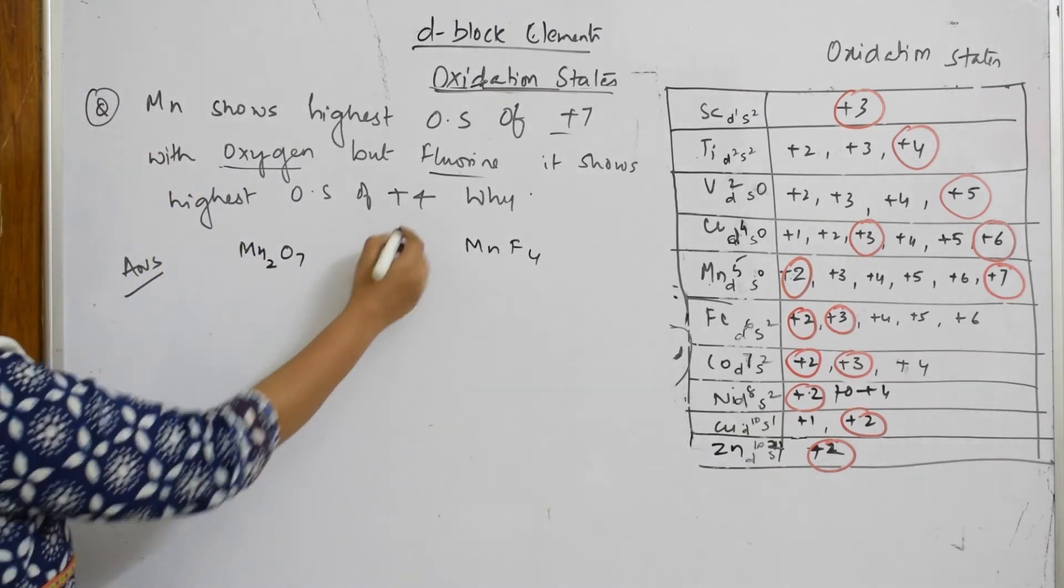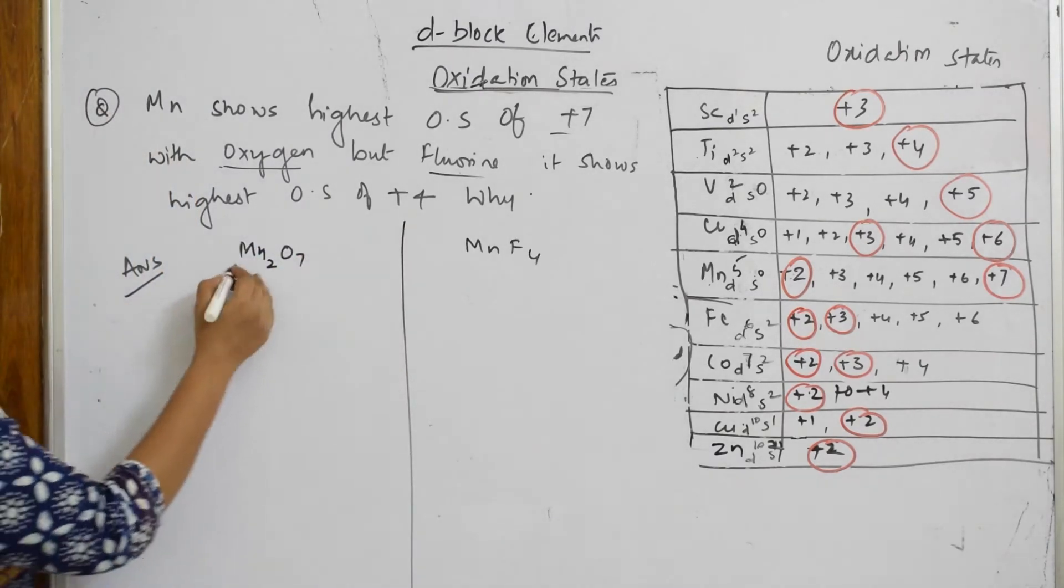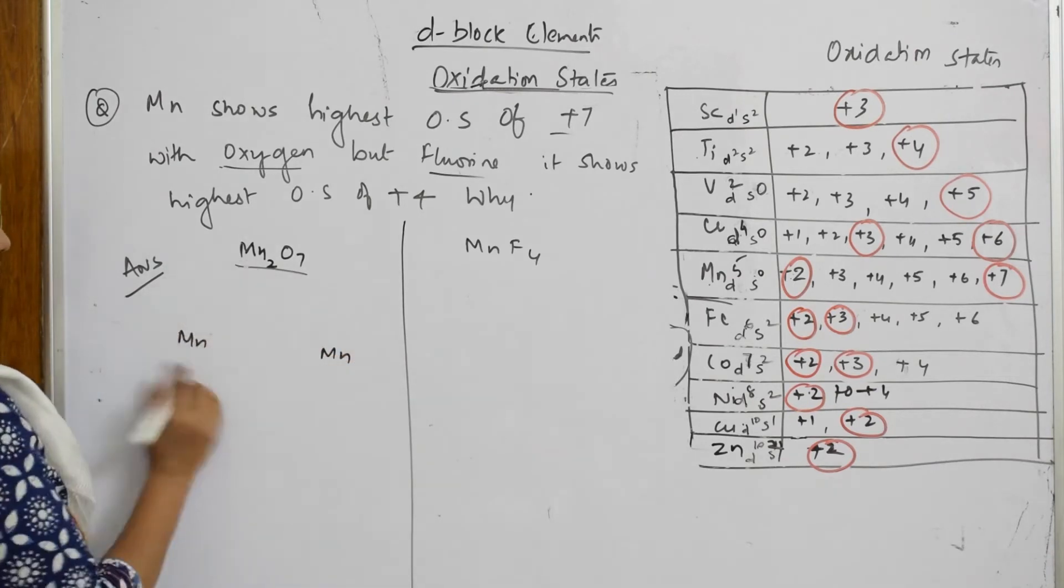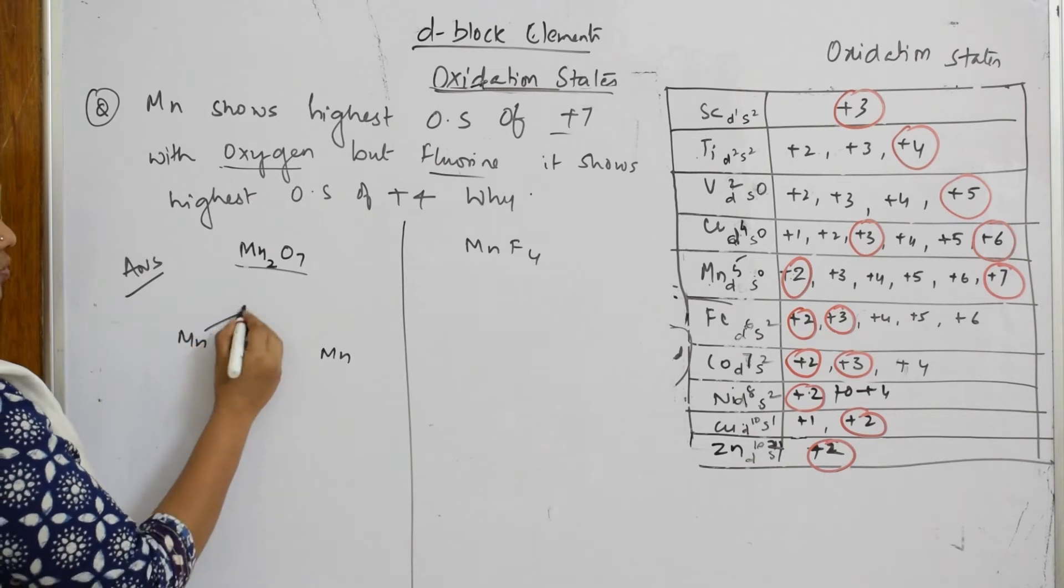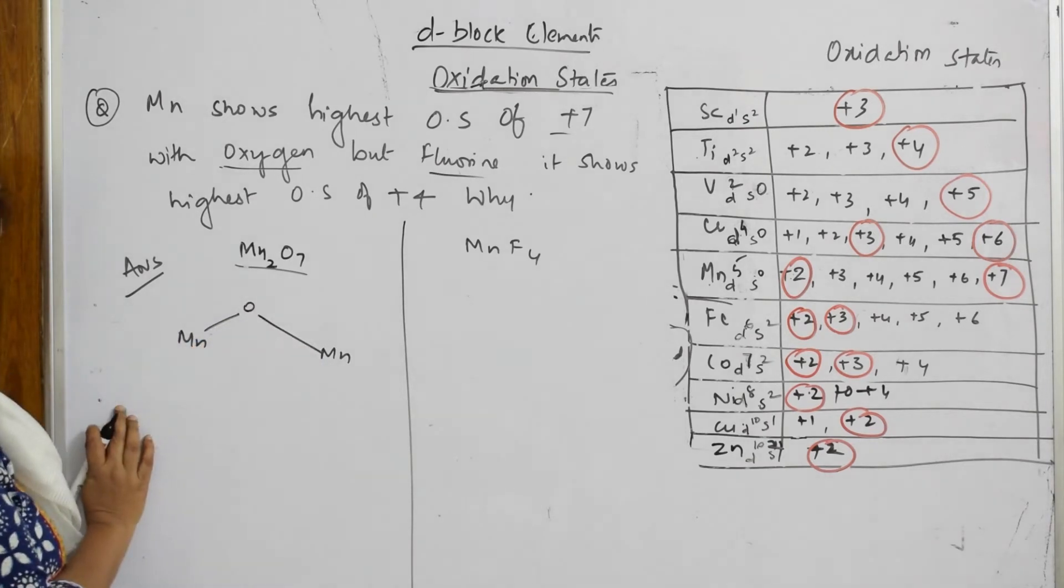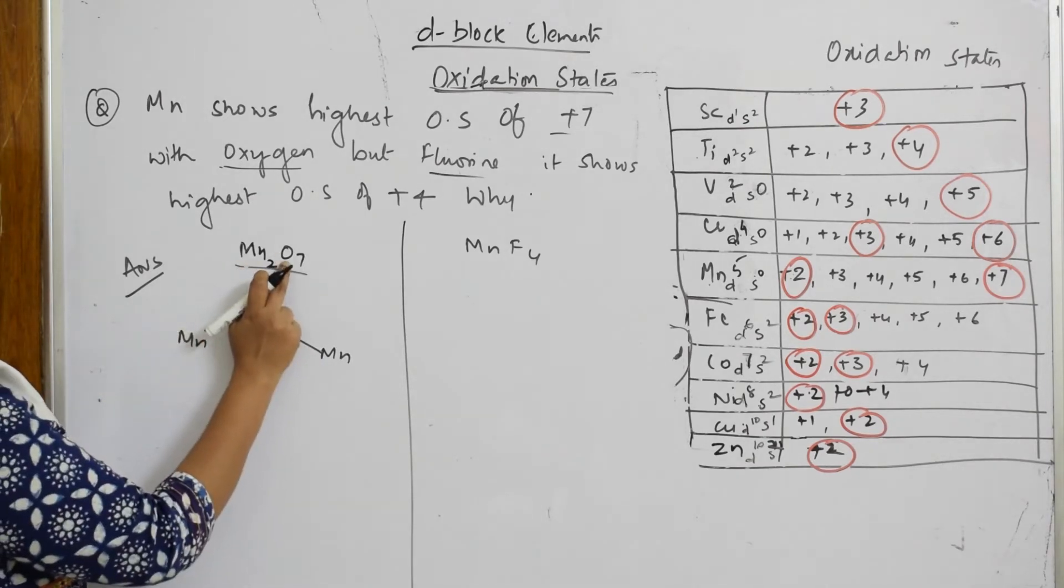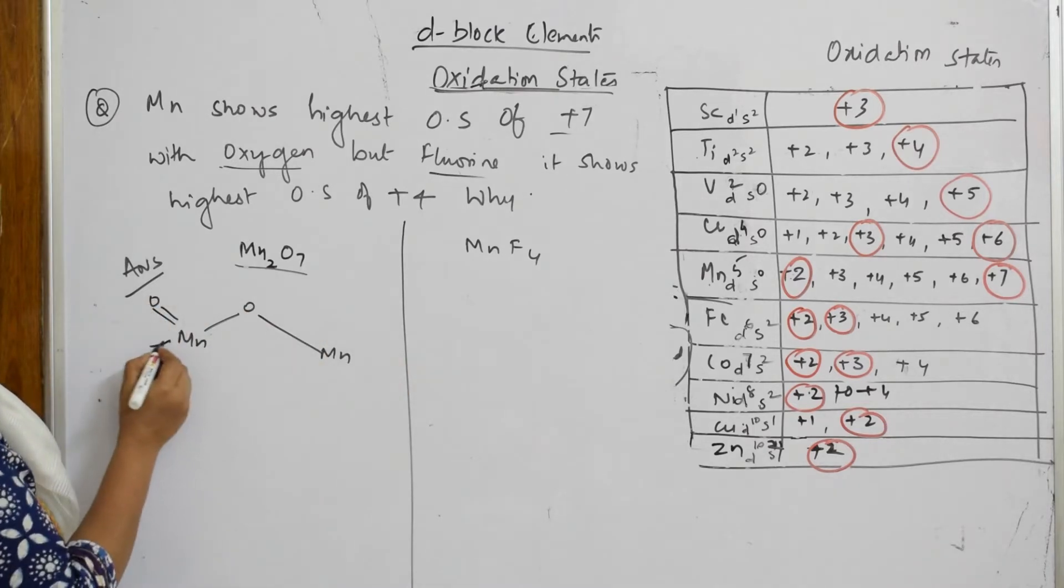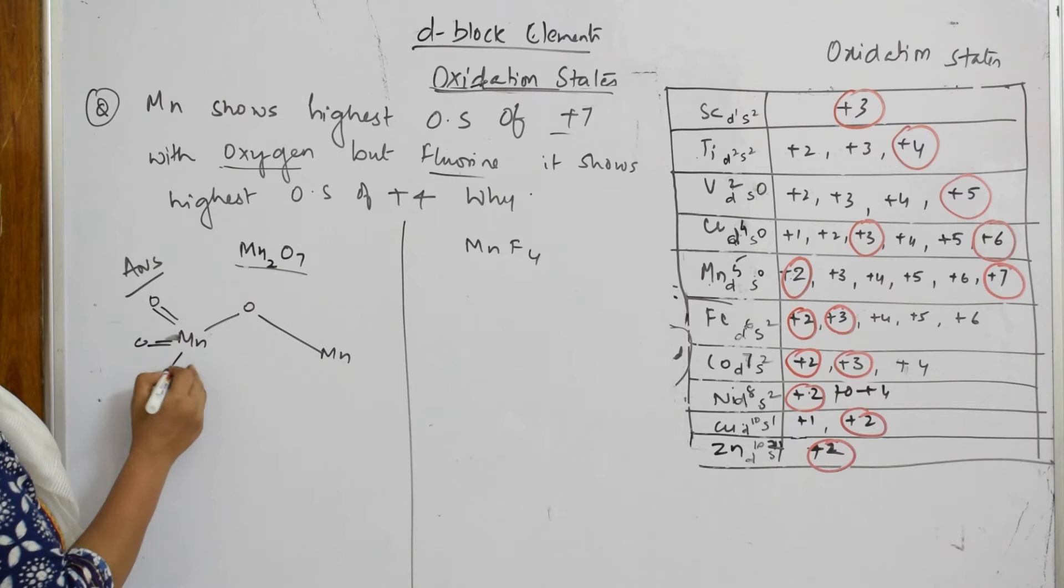Let us write the structure. Manganese is here, one more manganese is here. Seven oxygens: one oxygen forms links between both manganese atoms, and you have six more - three on each side. One, two, three, four, five, six, and seven.